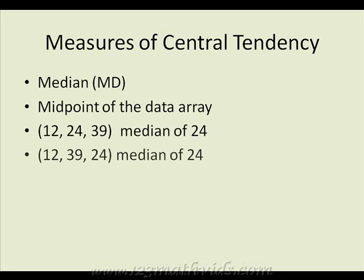Let's have another data set: 12, 39, and 24. In this case we also say the median is 24 because the first step in finding the median is to sort them numerically. So here we would rearrange the set to be 12, 24, 39, thus the second term would be 24.